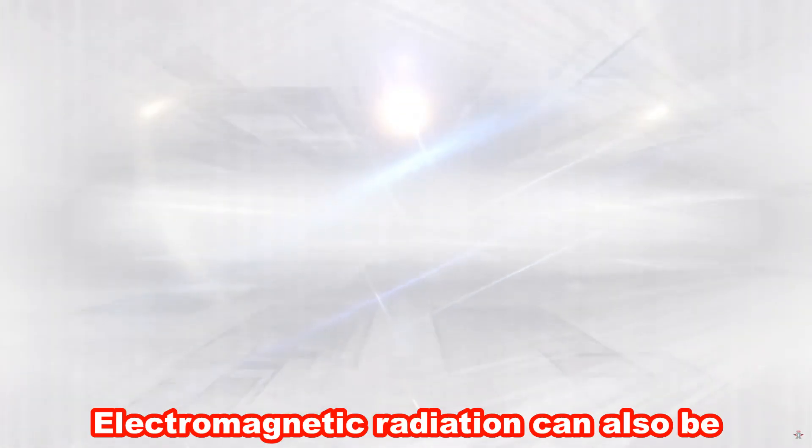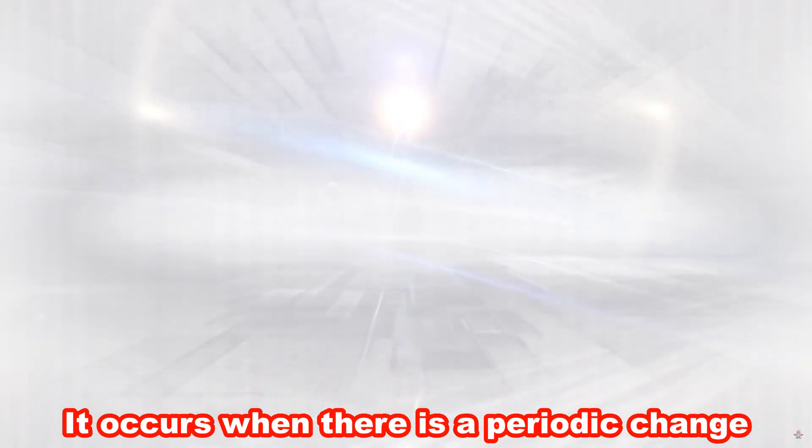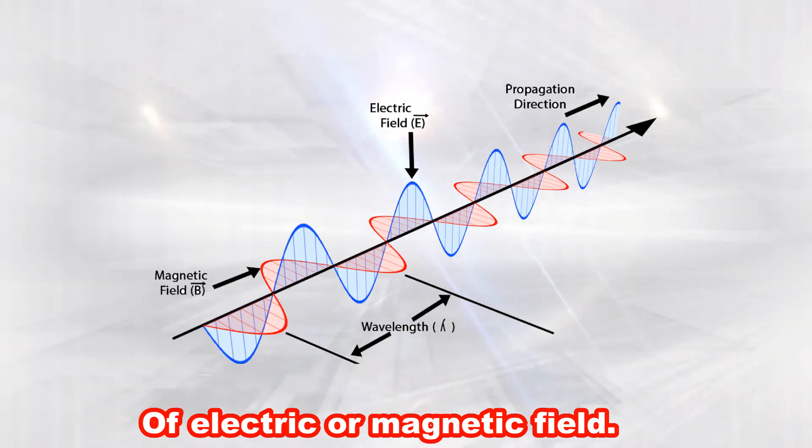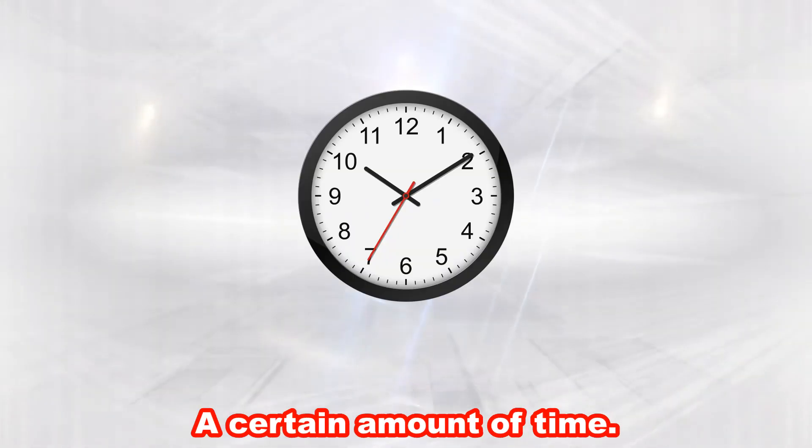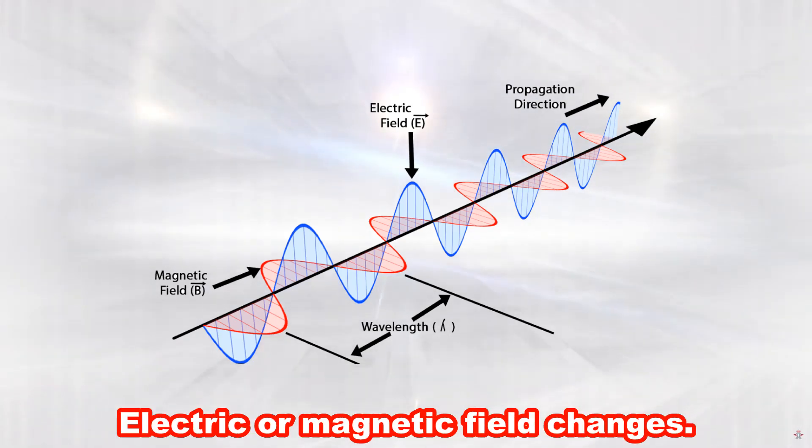Electromagnetic radiation can also be referred to as electromagnetic waves. It occurs when there is a periodic change of electric or magnetic field. Periodic change meaning that something repeats itself after a certain amount of time. Example can be change of seasons. So it happens when an electric or magnetic field changes.